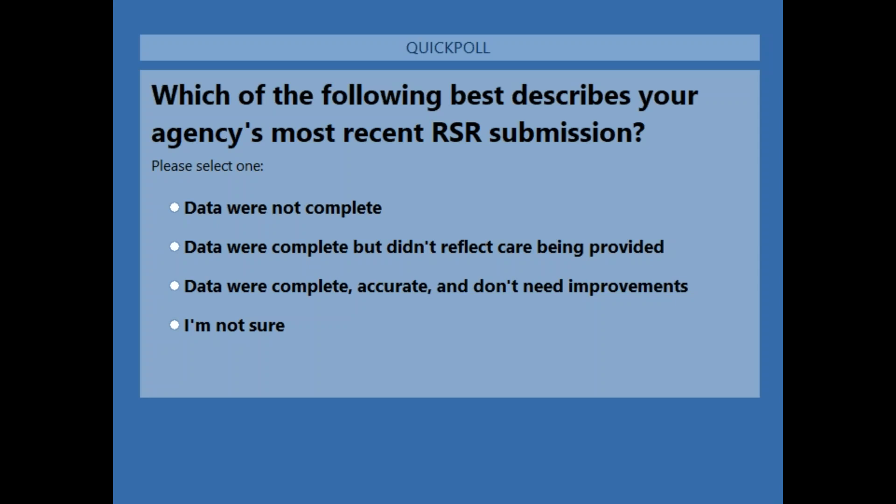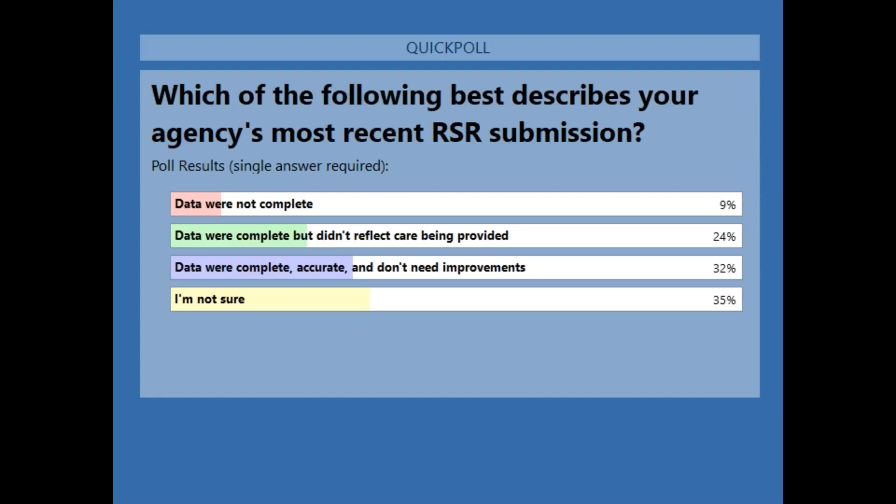Our first poll question today is: which of the following best describes your agency's most recent RSR submission? Data were not complete; data were complete but didn't reflect the care being provided; data were complete, accurate, and don't need improvements; or I'm not sure. Results show 9% of respondents saying their data were not complete, 24% say data were complete but didn't reflect the care being provided, 32% say their data were complete, accurate, and don't need improvements, and 35% are not sure.